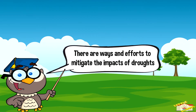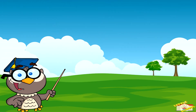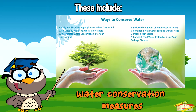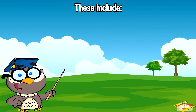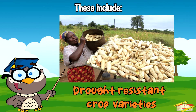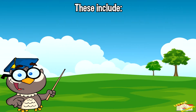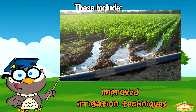There are ways and efforts to mitigate the impacts of droughts. These include water conservation measures, drought-resistant crop varieties, and improved irrigation techniques.